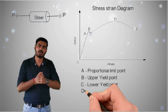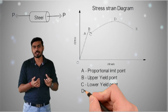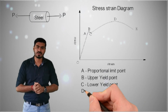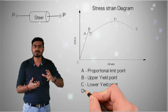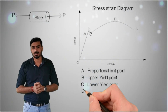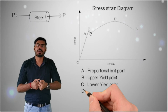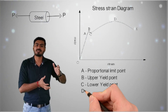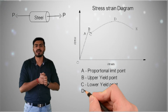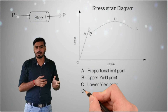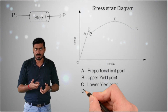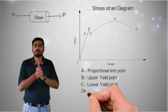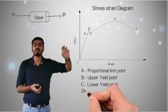At point C, the lower yield point, the material starts gaining strain hardening. This is a process where the material becomes hardened and its toughness increases. Whenever the material gets hardened, you require more stress to deform it further. So when you increase forces from point C, there is an increment in stresses and the material demands more strain to reach those stress levels.